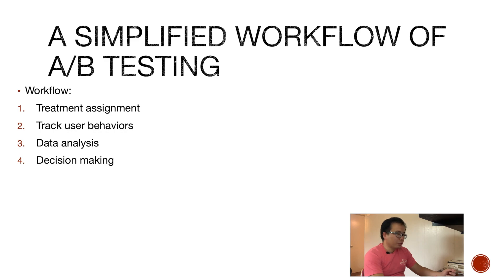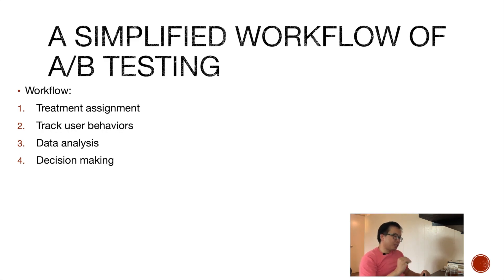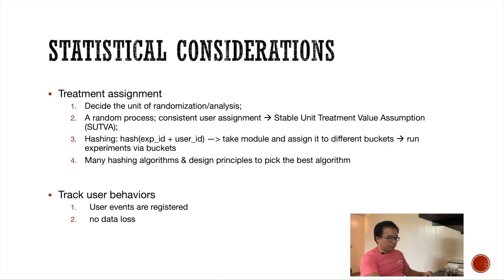Here is a simplified version of A/B testing — it has four steps: treatment assignment, tracking user behaviors, data analysis, and decision making. In real-life experimentation platforms there will be more components attached to the workflow, but for today's video I want to keep things simpler so you can understand better. In the next slide I'll introduce some statistical considerations for each step.